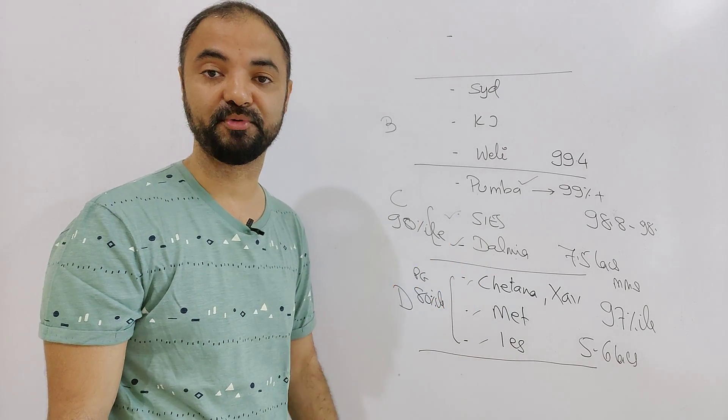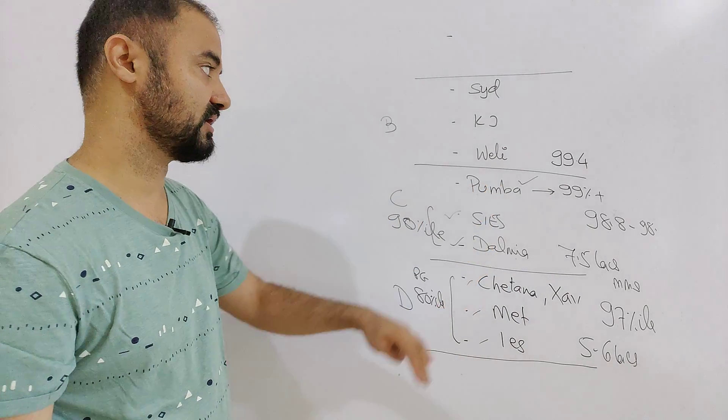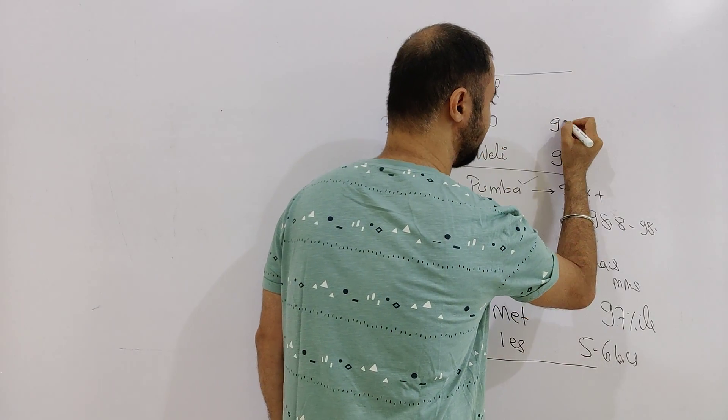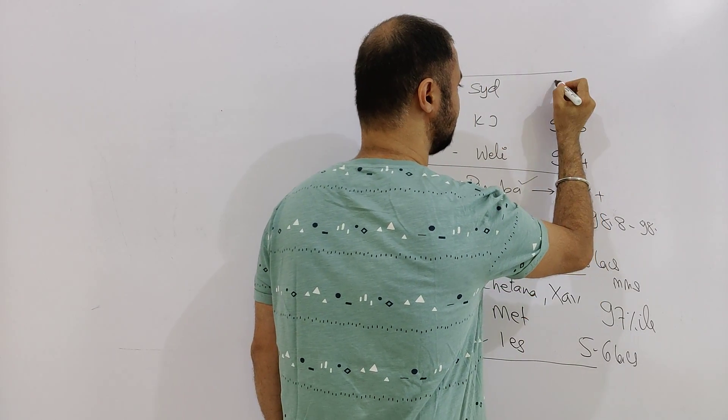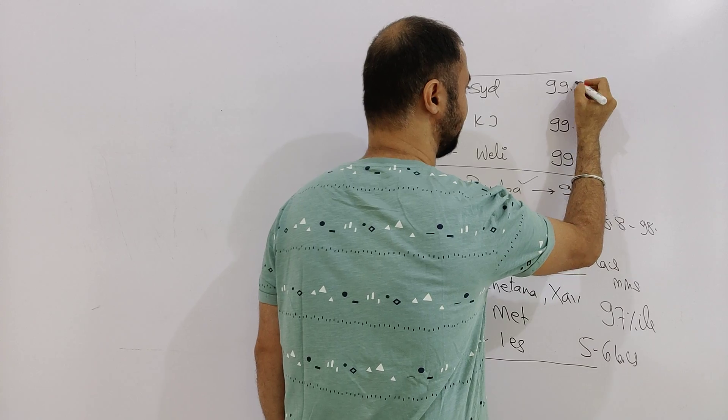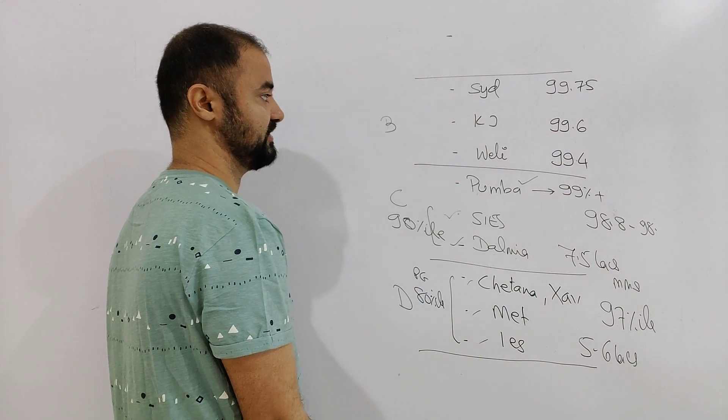Third round might go to 99.3 as well. But that's your overall cutoff. Somaiya cutoff will be around 99.6. Sydenham cutoff 99.75 approximately.